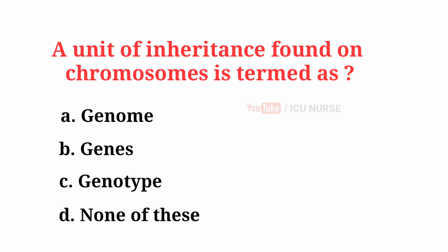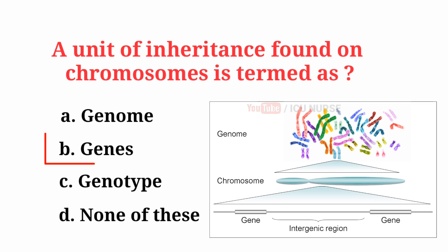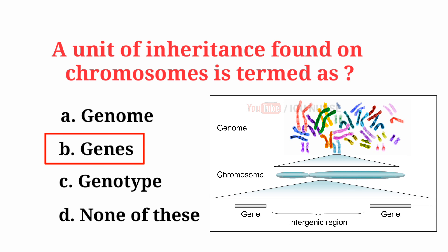A unit of inheritance found on chromosomes is termed as... The correct answer is B, Genes.